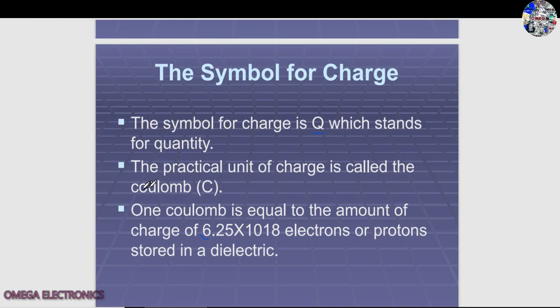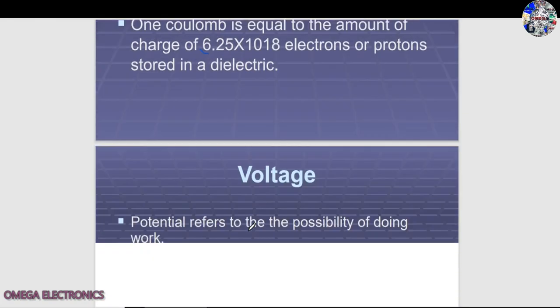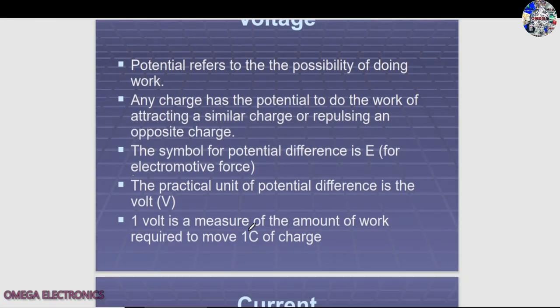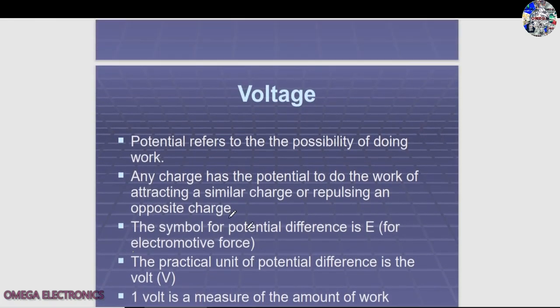The symbol for charge is Q, which stands for quantity, and its unit is the coulomb, represented by C. Voltage, or potential, refers to the possibility of doing work. Any charge has a potential to do work by attracting a similar charge or repelling an opposite charge.